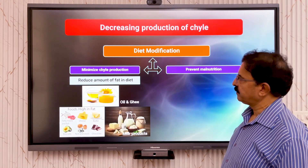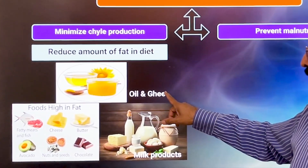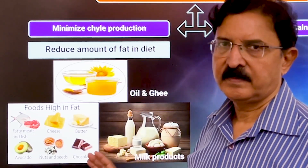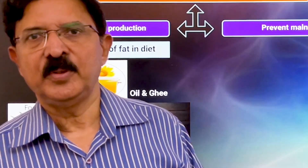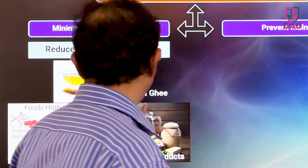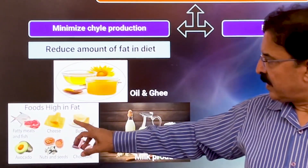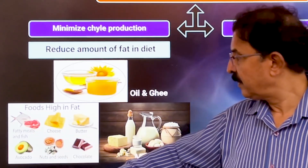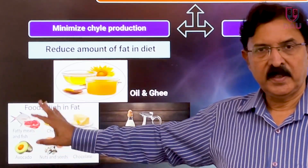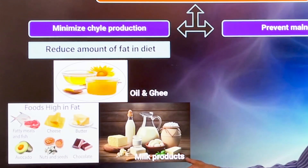The key items in the Indian diet are ghee and oil — all oils should be restricted, and all kinds of ghee, purified or non-purified, refined or otherwise, should be cut down. Foods high in fat — butter, cheese, meat, fish, nuts, seeds, chocolate, and even avocado — should all be stopped. All milk products should also be stopped.